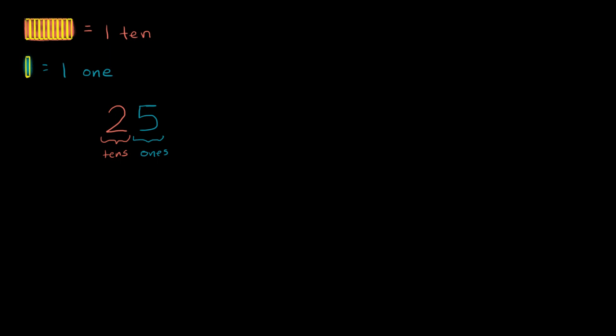What do I mean by that? Well, another way to write this is - this two represents two tens. So let me write that down. This is equal to two tens plus five ones.